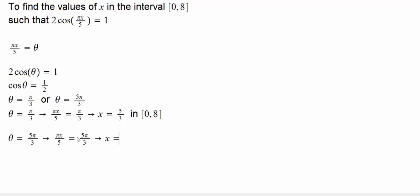Pi's will cancel. So, x will be 25 over 3, and this wouldn't be in this interval, because it's slightly more than 8. With these two values, that's all that we have here.